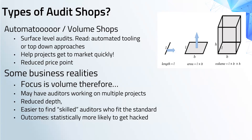Furthermore, sometimes the list of bugs in top-down approaches is not necessarily well aligned with the project being audited. It is important for auditors following a top-down approach to work closely with projects to determine the appropriate classes of bugs to search for.